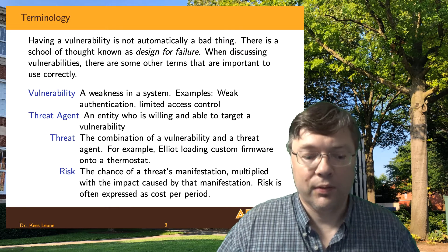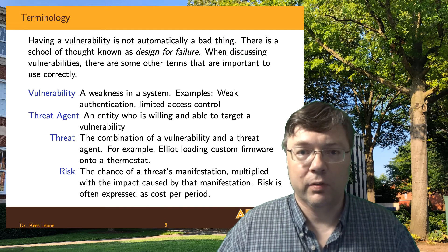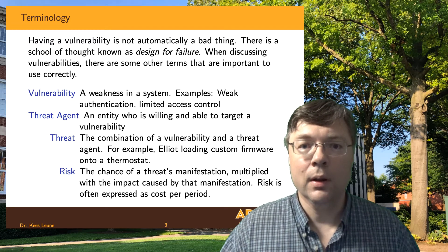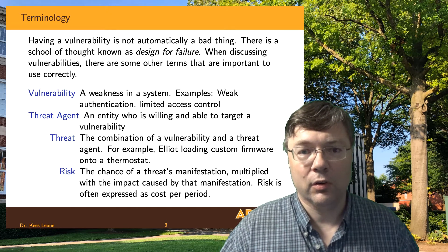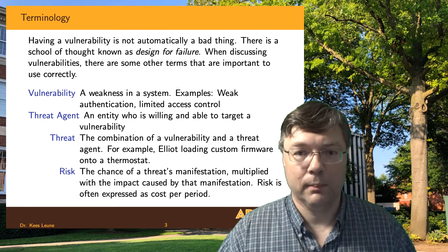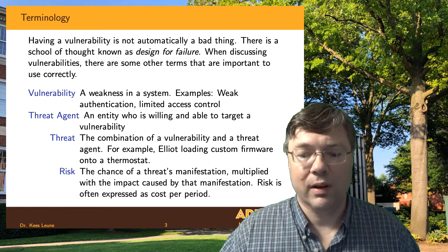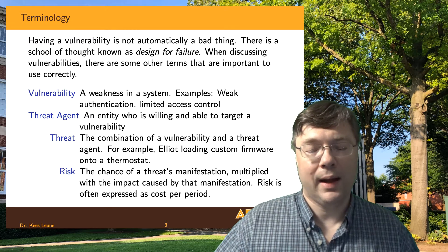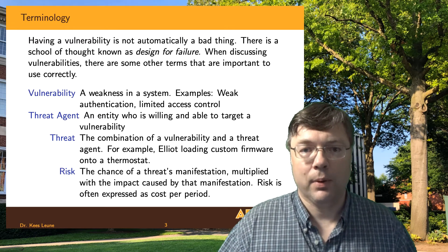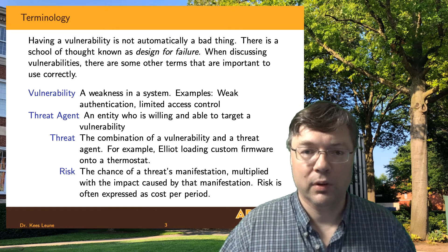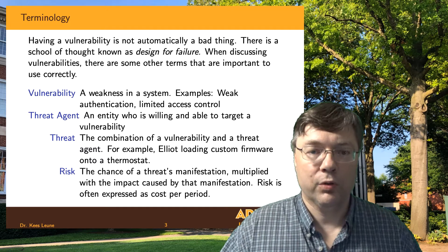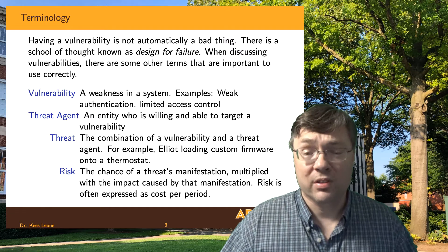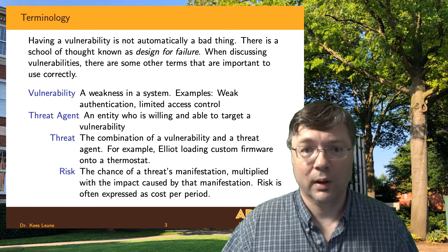For those who have seen Mr. Robot, Elliot was the threat agent. The IoT thermostat had the vulnerability. But it didn't become an issue until Elliot started loading his custom firmware onto that thermostat — the combination of the two is the threat. The risk is an attempt at quantifying how bad the threat is, and we do that by looking at impact and likelihood, which we've talked about in previous videos. We'll try to keep vulnerability, threat, and risk separate — though everyone slips up now and then.